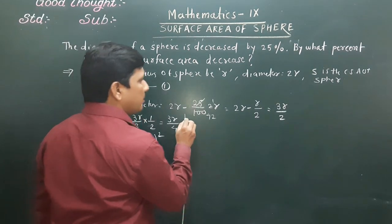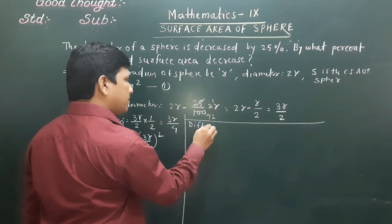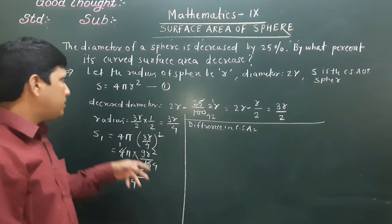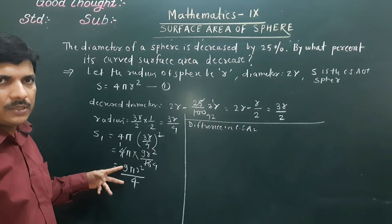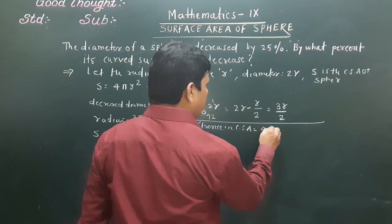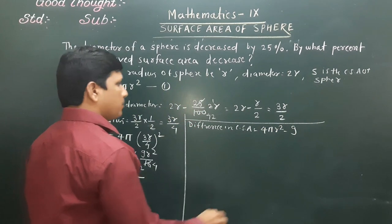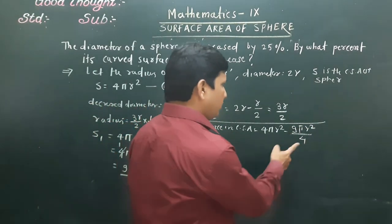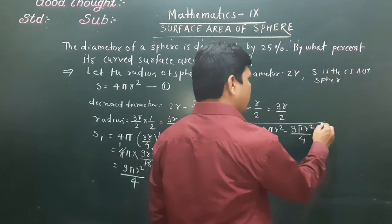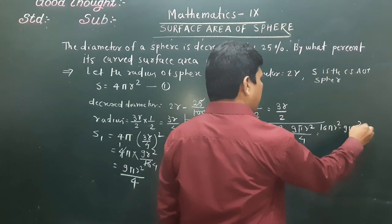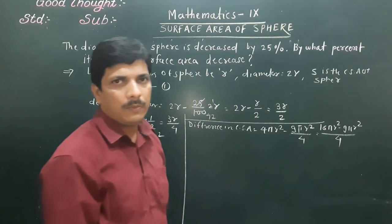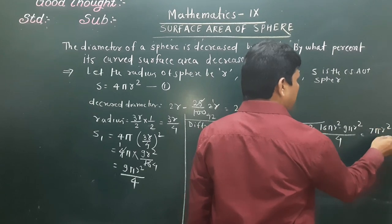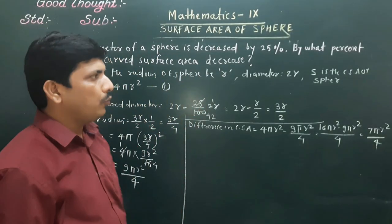Now we find the difference in curved surface area. Difference = original − new = 4πR² − 9πR²/4 = 16πR²/4 − 9πR²/4 = 7πR²/4.